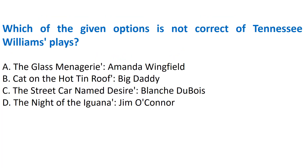Next question: 'Which of the given options is not correct about Tennessee Williams' plays?' Options are provided with play titles and characters. Tennessee Williams was an American playwright and screenwriter, considered one of the great three playwrights of the 20th century in American drama. The correct answer is Option D, which contains incorrect information about his plays.